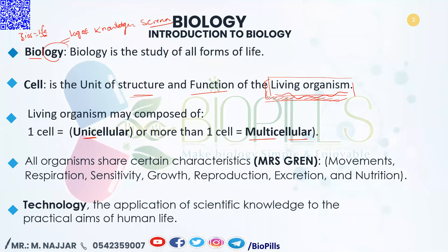These common characteristics are abbreviated in the word MRSGREN: M is for movement, R is for respiration, S is for sensitivity, G is for growth, R is for reproduction, E is for excretion, and N is for nutrition.